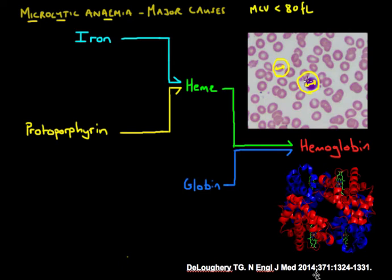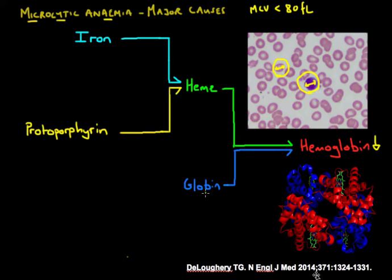Microcytic anemia is characterized by one important thing: a decrease in the amount of hemoglobin. If you know the cause is decreased hemoglobin, you just go back and look at what makes up hemoglobin. Hemoglobin is made up of heme — a protoporphyrin ring containing iron — and globin, which has four globin chains: two alpha and two beta. Iron and protoporphyrin together make up the heme ring.